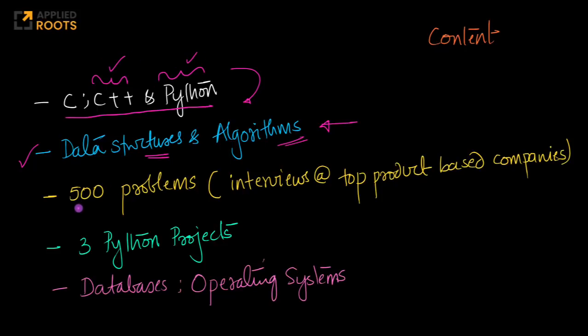In this course itself, we will solve approximately 500 problems which are often typically picked from top product-based companies. These are often asked in interviews at top product-based companies. We will also have three Python projects so that you understand the real-world applications of some of the data structures and algorithms that you have learned and how they can be used to solve real-world problems. We will also cover some foundations of databases like normalization, SQL, etc., and some basic concepts in operating systems because these are often important if you're interviewing for software engineering roles at most companies, including the top product-based companies.